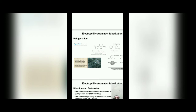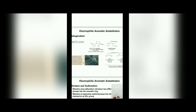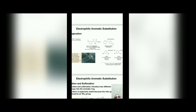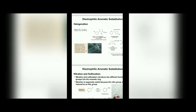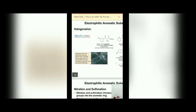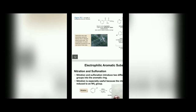Some halogenated benzene compounds have pharmaceutical applications — for example, bupropion (trade name Wellbutrin or Zyban) and chlorpheniramine, an antihistamine. Other halogenated benzene derivatives were used as herbicides extensively during the Vietnam War to defoliate dense jungle areas, and the concentration of certain herbicide by-products in the soil remains high today.